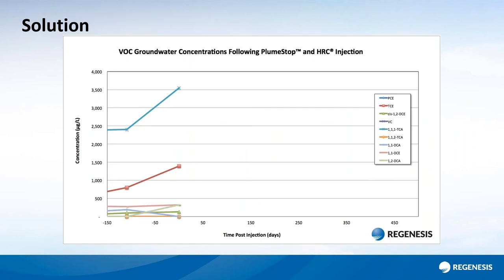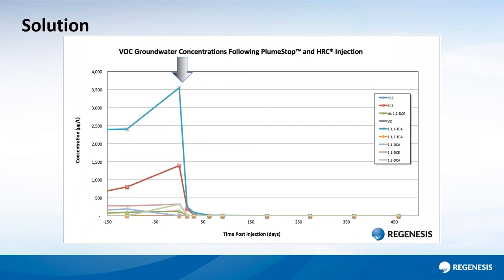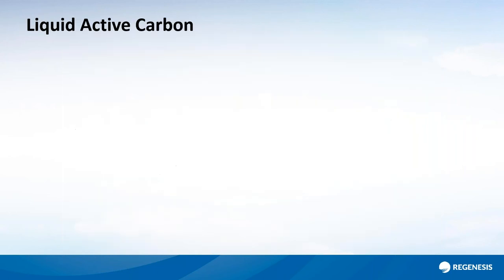Here's a little taster of the results you can see by using liquid activated carbon. We've got a mixed plume of chlorinated ethenes and ethanes. You apply the product — we see enhanced reductive dechlorination. If you were just doing enhanced reductive dechlorination without the sorption side of the treatment, you would see sequential degradation and production of daughter products over a number of months. With the liquid activated carbon product, enhanced reductive dechlorination is still going on, but it's happening on the surface of the activated carbon itself.